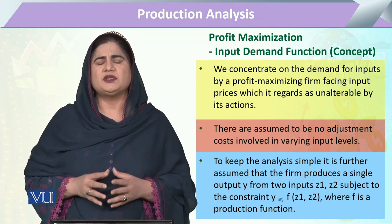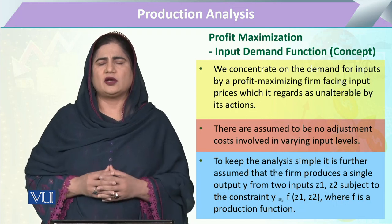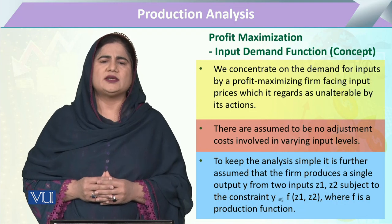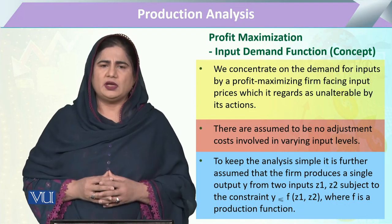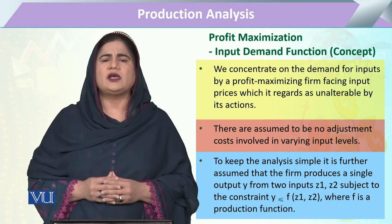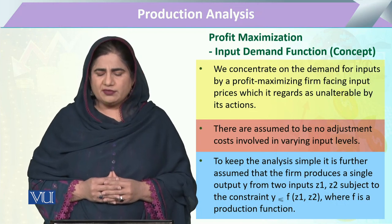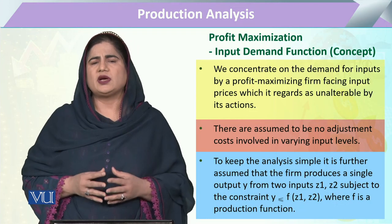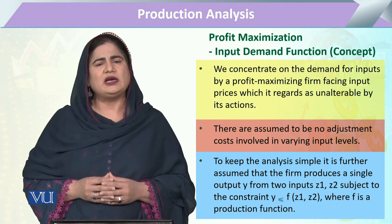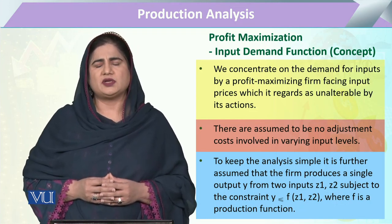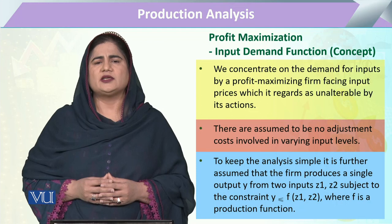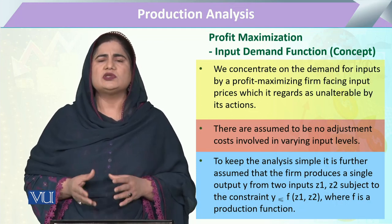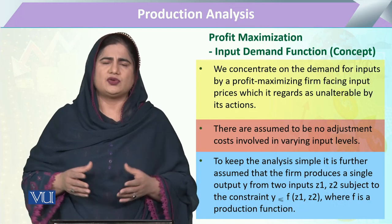How this relationship is maintained — we know that the consumer, whenever he is producing, has to utilize certain amounts of inputs. In this example, we take two inputs, Z1 and Z2. When these two inputs are there, definitely in the market there will be certain prices attached to these two inputs, though there can be many others; mostly we take two or three like this.